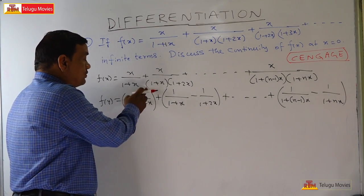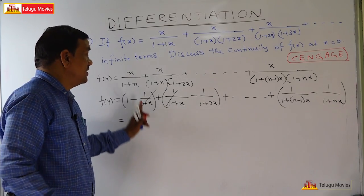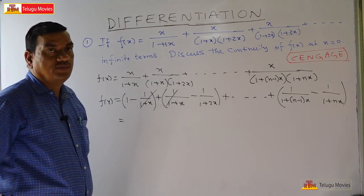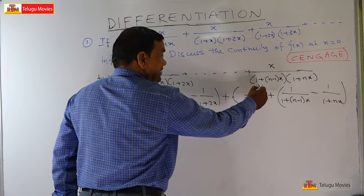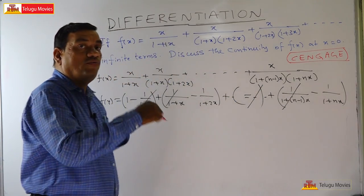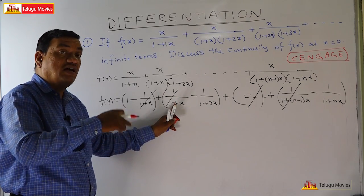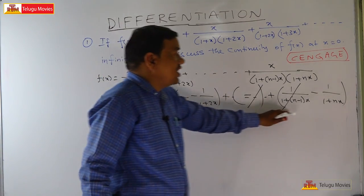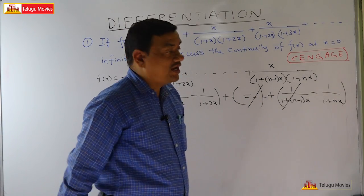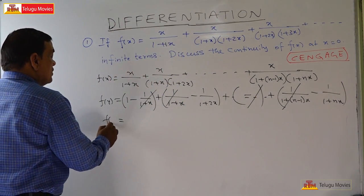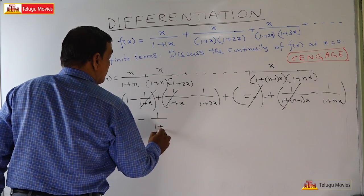After cancellation, consecutive terms cancel each other: the second term of each bracket cancels with the first term of the next bracket. The remaining terms after telescoping give us: f(x) = 1 - 1/(1+nx) as the sum to n terms.